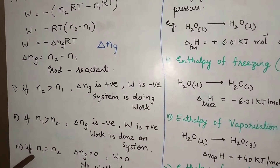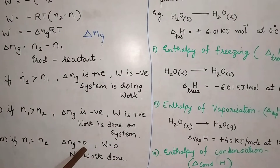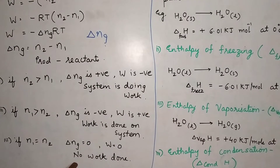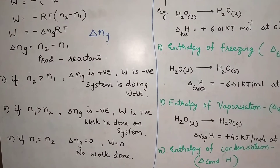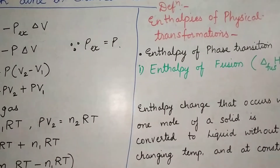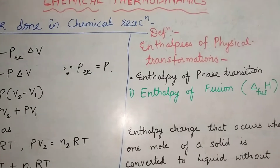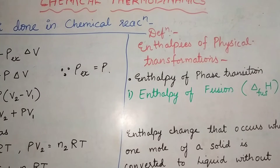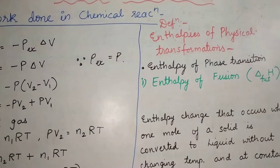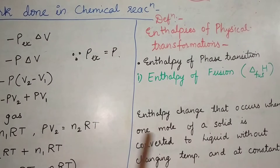In the third condition, if N1 is equal to N2, then delta Ng is equal to zero, and the whole expression for W becomes zero. This indicates that there is no work done. The next point is about the different types of enthalpies that we observe in different types of processes — first, enthalpies during physical changes, or physical transformations.